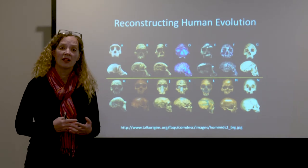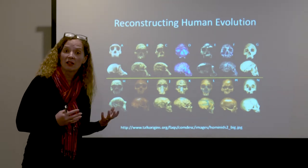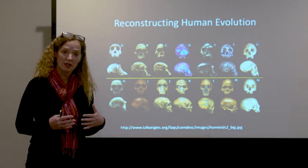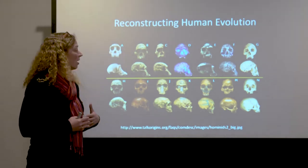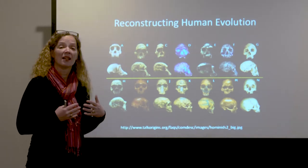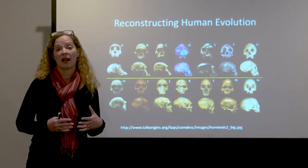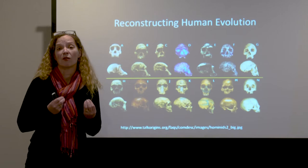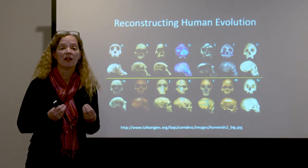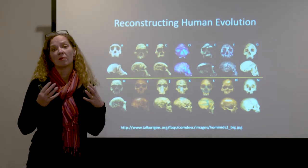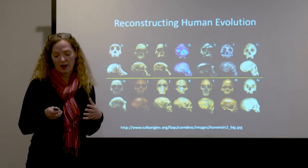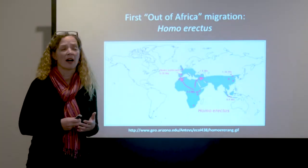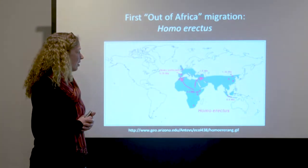We know from the fossil evidence that our earliest hominin ancestors, the Australopithecines, existed exclusively in Africa. So human origins are traced to Africa — we all ultimately came out of Africa, but there have been multiple out-of-Africa migrations.